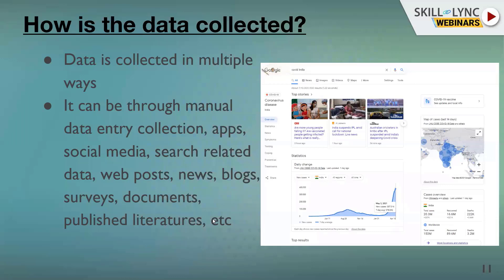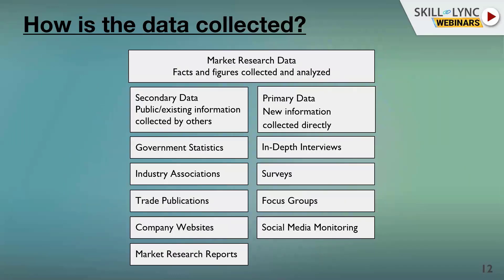How is this process done? We have two types of data collection. Primary data collection involves collecting data directly — through interviews, surveys, focus groups, social media, and face-to-face conversations. Secondary data collection is using existing data collected by others, including government statistics, industry associations, trade publications, company websites, and market research.